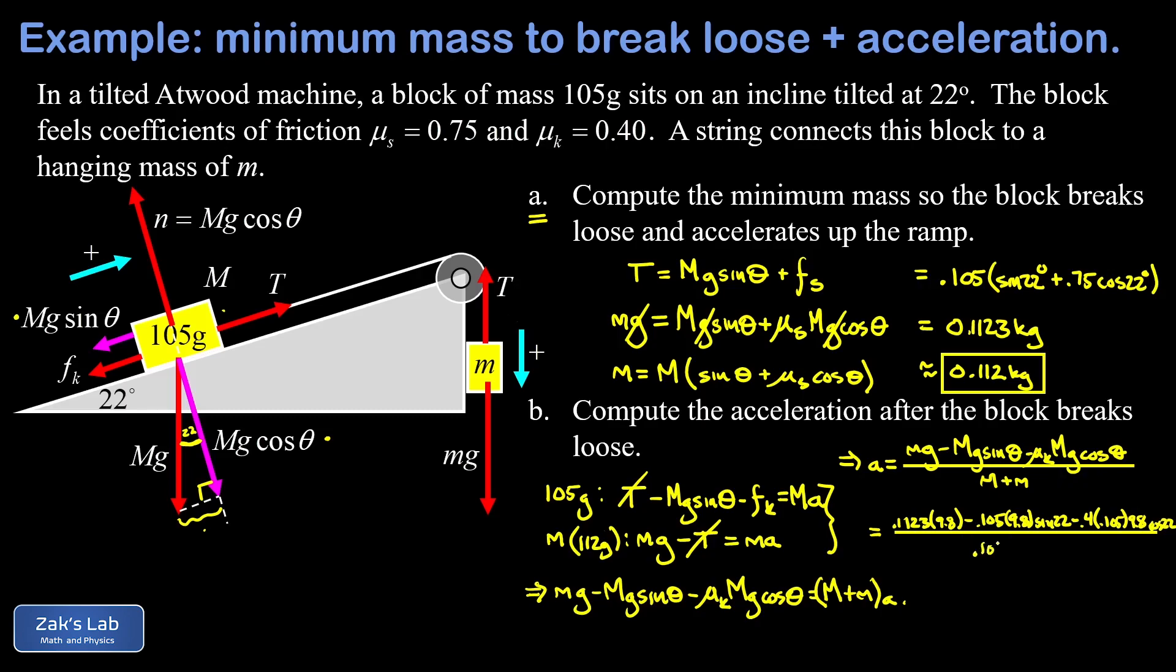So that's 0.105 kilograms plus 0.1123 kilograms. And when we run the numbers on this and round to three significant digits, we end up with 1.53 meters per second squared.